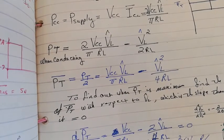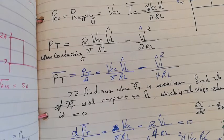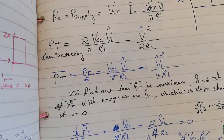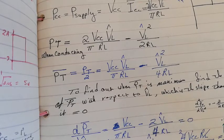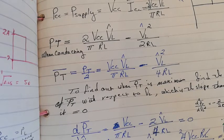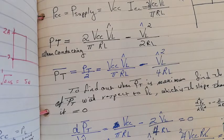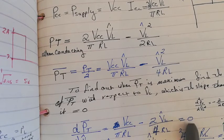Solving for V_L_peak: we have VCC / (π × R_L) = 2 × V_L_peak / (4 × R_L). Solving for V_L_peak gives V_L_peak = 2/π × VCC, which equals 0.63 × VCC. Any amplitude less than this will stress the conducting transistor less; any amplitude above this also means less power dissipated. This is exactly the maximum point where the derivative equals zero.